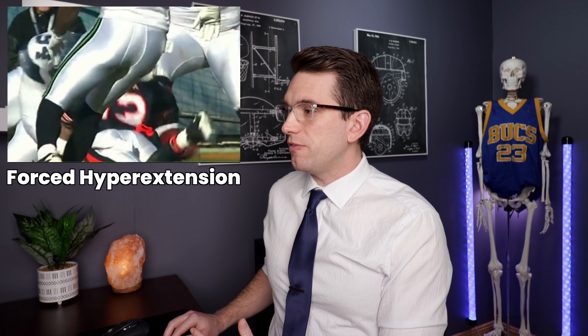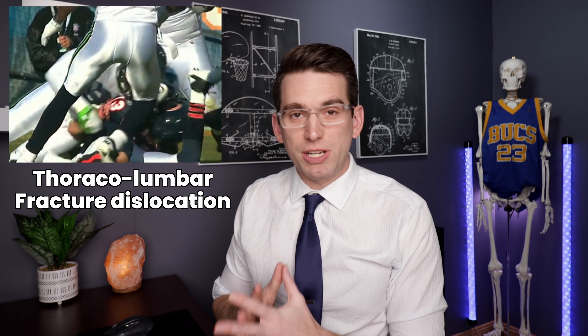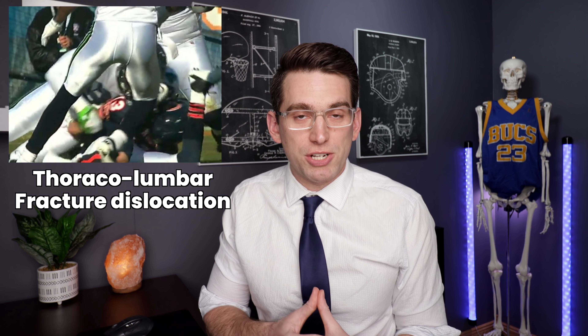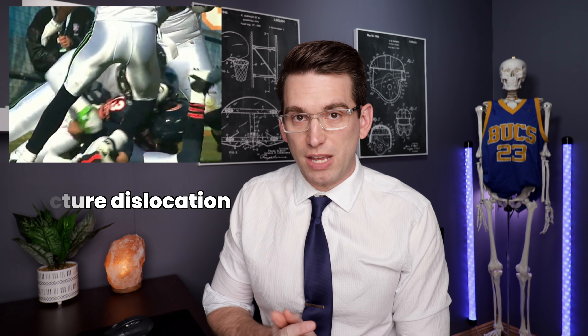This was the play in 2011 where Johnny Knox got hurt. He's trying to recover this fumble, and as he dives forward trying to get the ball up off the ground, we see the Seattle defender come in and basically force Knox's back into a severe amount of hyperextension, where his back is almost completely folded up and touching his lower back. Knox suffered a fracture dislocation of a region of his spine called the thoracolumbar junction and required a fusion surgery to correct the fracture, but also suffered some nerve damage.